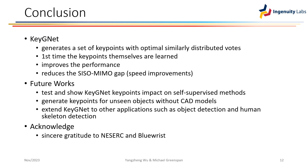Looking ahead, our future endeavors include demonstrating the impact of Key-GNet keypoints on self-supervised 6D pose estimation methods, specifically those relying only on labeled synthetic data and unlabeled real images. Additionally, we aim to explore the potential usage of Key-GNet to generate keypoints for unseen objects without a CAD model. The extension of Key-GNet to diverse applications such as object detection and human skeleton detection is also under consideration.